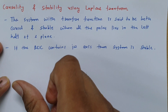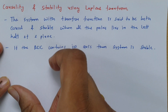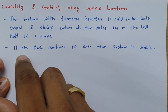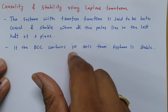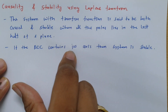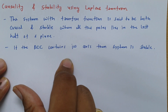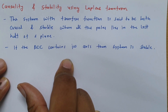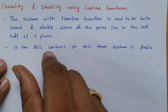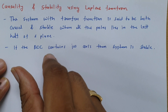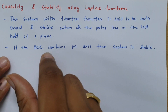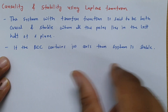So first you observe: if all poles are in the left half of the S-plane then the system can be stable. The second point is: if the ROC contains the j-omega axis then the system is stable. These two points we need to confirm before we identify causality and stability. Causality can be directly determined from the number and position of poles, but stability is also defined by the ROC.